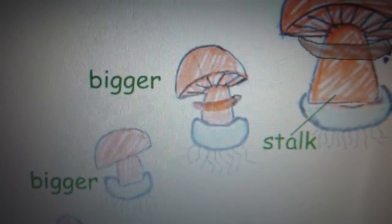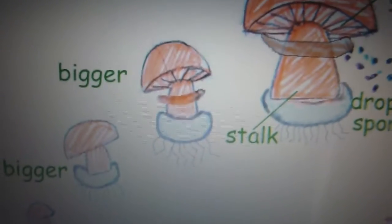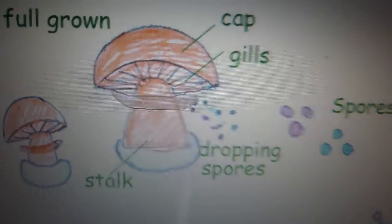When the gills grow up and get ready, the cover falls off and spreads spores from the gills and the spores germinate again.